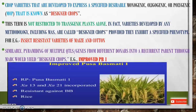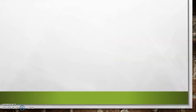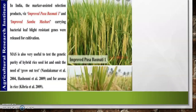According to Nandakumar et al. 2004 and Hussain et al. 2009, marker-assisted selection is also very useful to test the genetic purity of hybrid seed lots and omits the need for the grow-out test (GOT). For aroma in rice, it also omits the need for that test, according to Kibera et al. 2009. There are three important varieties or achievements through marker-assisted selection from BLB-resistant varieties.